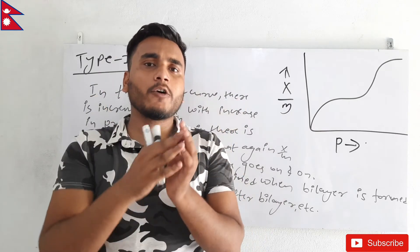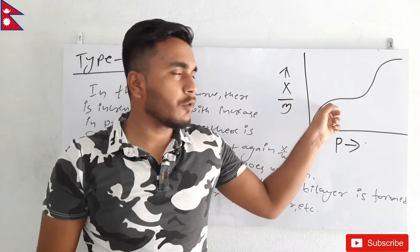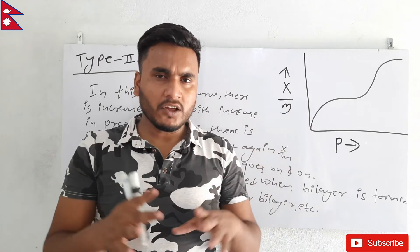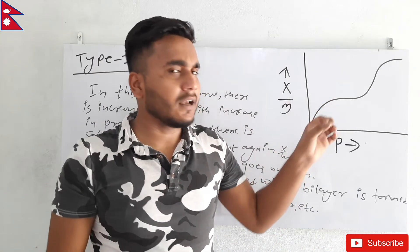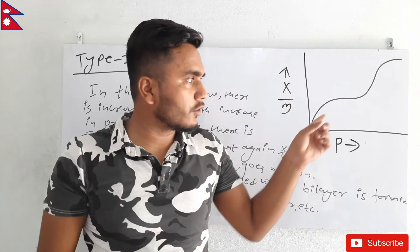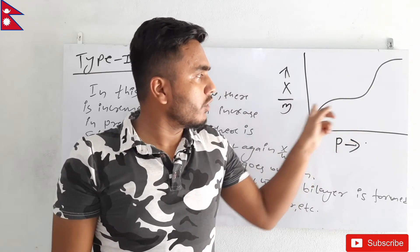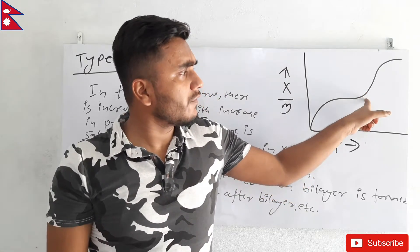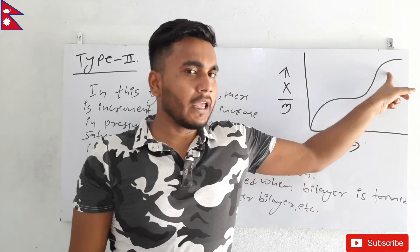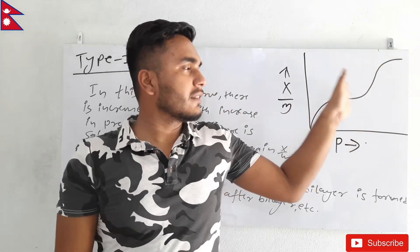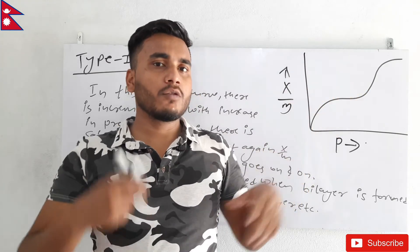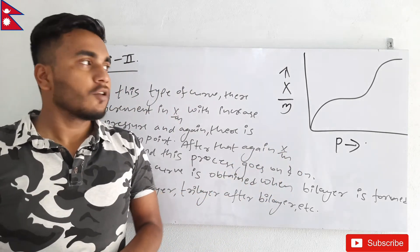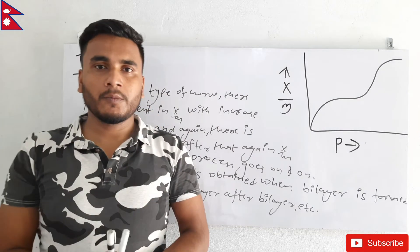This type of curve is obtained when formation of bilayer, trilayer, or higher layers occurs. When every vacant site of the solid is occupied by a gas molecule, the bilayer process begins — new gas molecules adsorb and form a bilayer, creating new vacant sites. After that, as pressure increases more, extent of adsorption increases again, showing formation of bilayer, then trilayer, tetralayer, pentalayer, and so on. This is what Type 2 adsorption isotherm is.